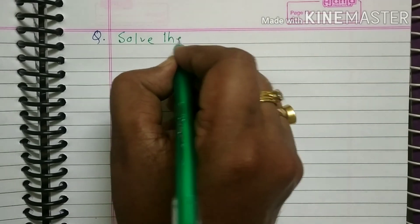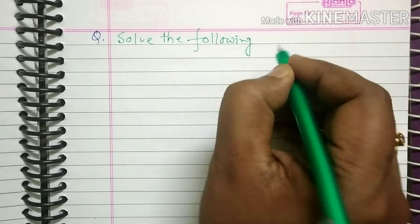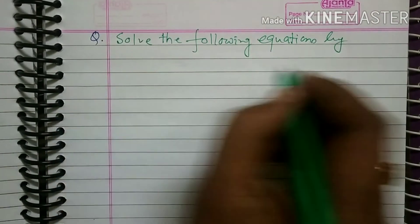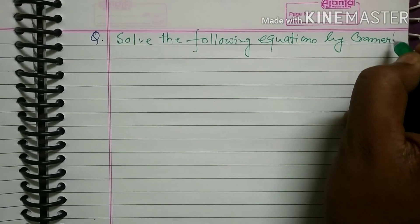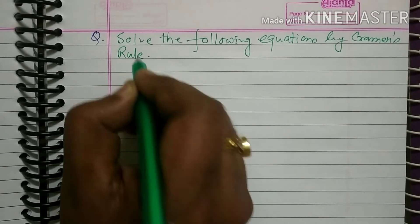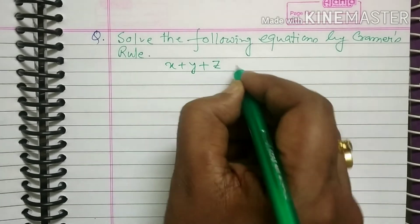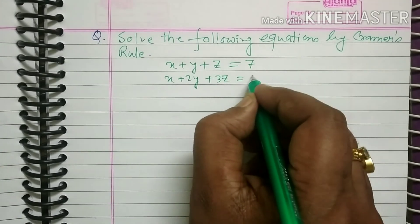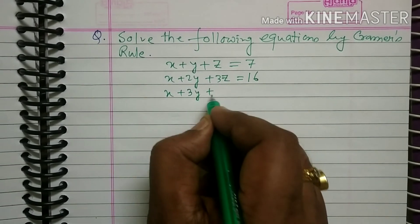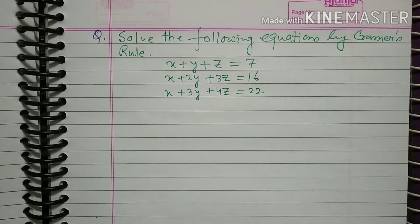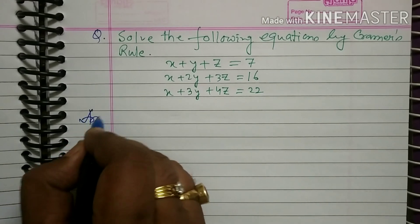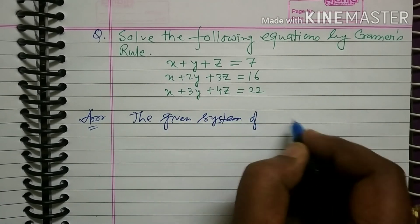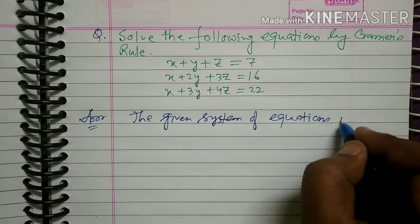Solve the following equations by Cramer's rule: x plus y plus z equals 7, x plus 2y plus 3z equals 16, x plus 3y plus 4z equals 22.